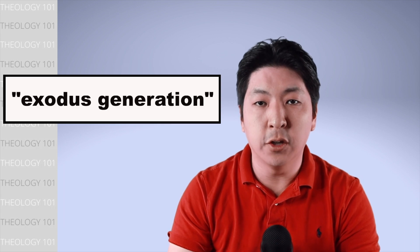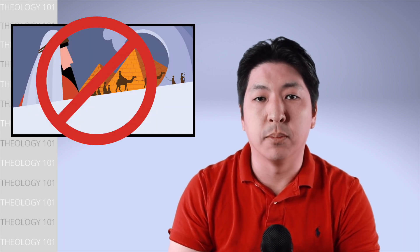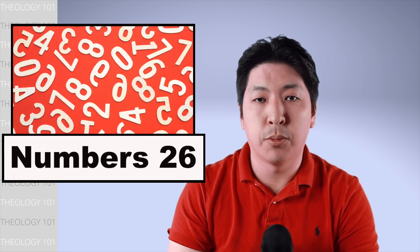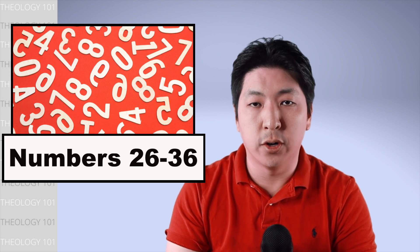However, we see from the narratives that the Exodus generation failed to enter the Promised Land because of God's judgment on them. Except for Joshua and Caleb, none of the people who were delivered from Egypt were able to enter the Promised Land. So a second census was taken for the next generation that will enter the Promised Land. And this covers Numbers chapters 26 to 36.